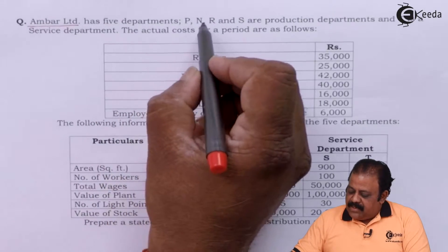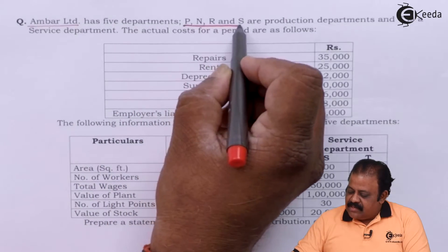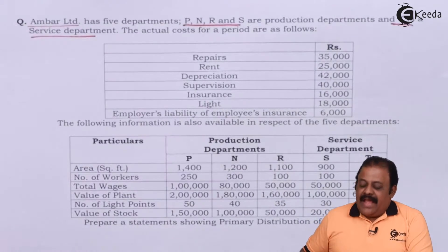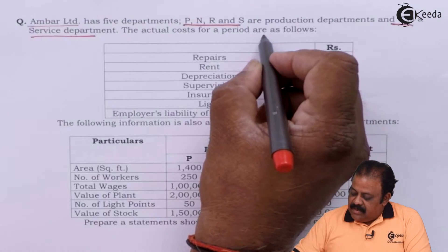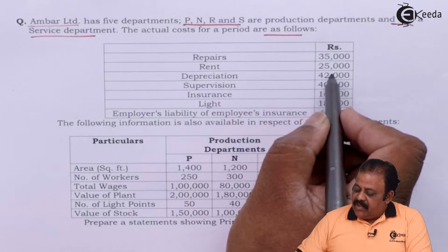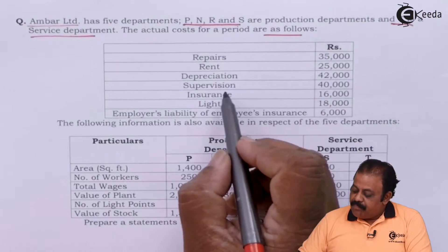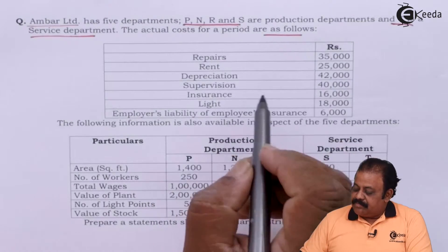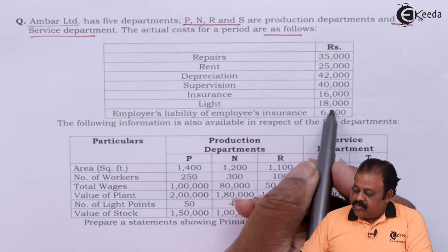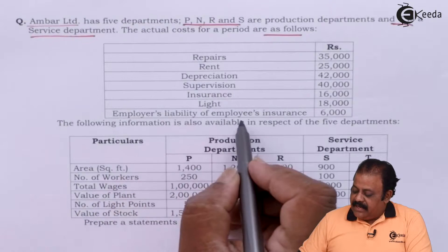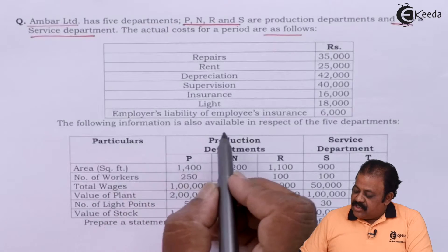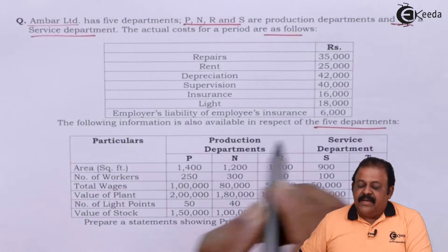Umber Limited has five departments. P, N, R, S are production departments and T is a service department. The actual costs for a period are as follows: repairs 35,000; rent 25,000; depreciation 42,000; supervision 40,000; insurance 16,000; lights 18,000; employer's liability of employees insurance 6,000.